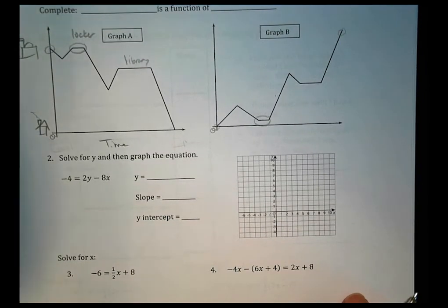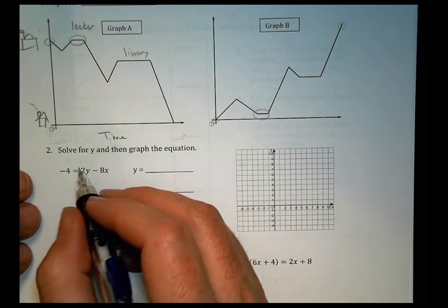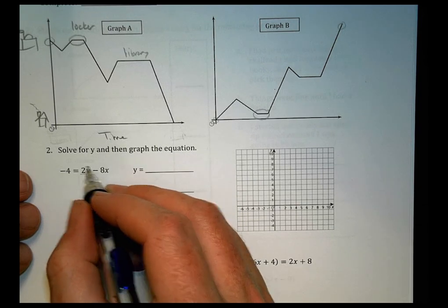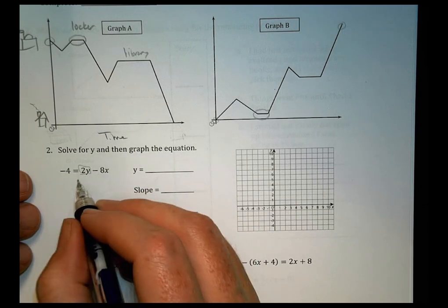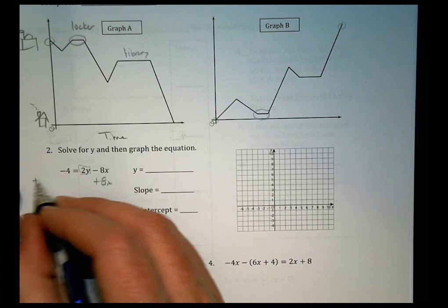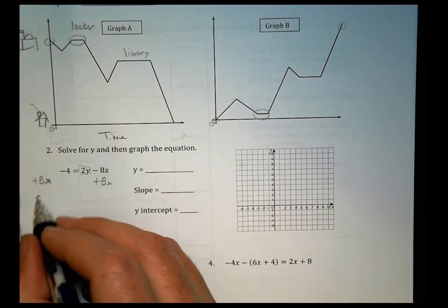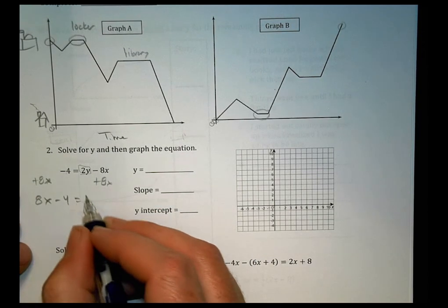So solve for Y. Then graph the equation. So let's do that here. Let's keep the Y on this side because it's nice and positive already. So let's add 8X over here. So we'll add 8X. Can't combine it with that. It's a different variable. This is an X. This is nothing. So over here, we have 8X minus 4 equals 2Y.